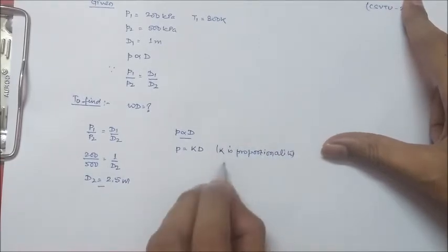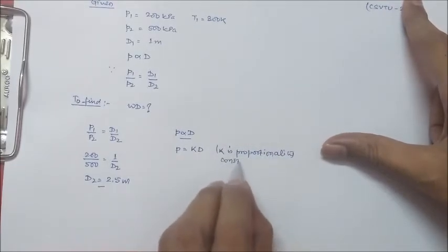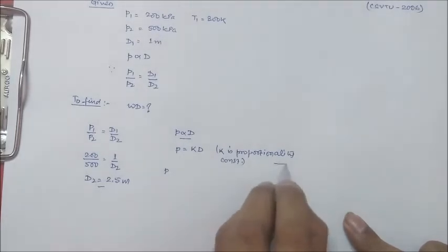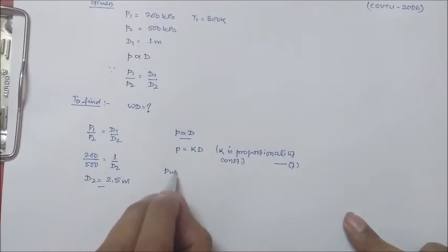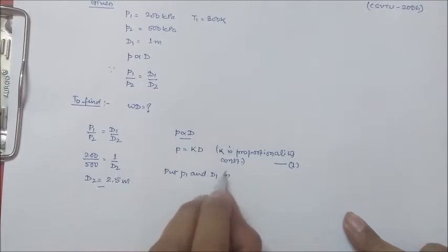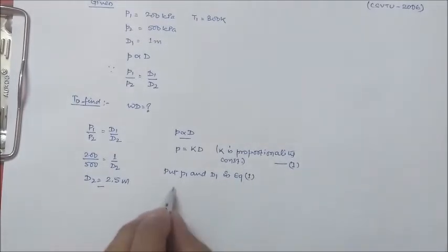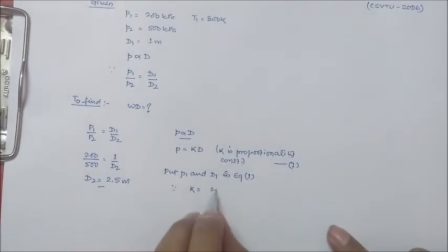So if we put P₁, make this as equation 1. Put P₁ and D₁ in equation 1, then we have K equal to 200.